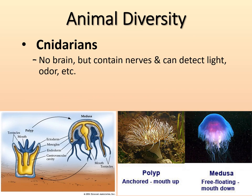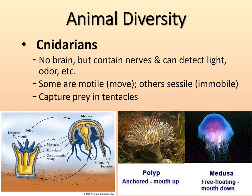Cnidarians don't have a brain, but they do have nervous tissue and can detect light and odor. Depending on the type or life cycle stage, some cnidarians are motile — jellyfish can move — while others are sessile, like many sea anemones and coral polyps. They capture prey with stinging tentacles and move it into their mouth opening and digestive sac.